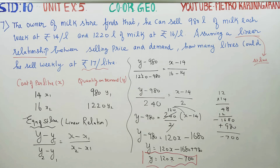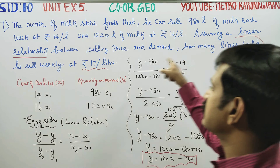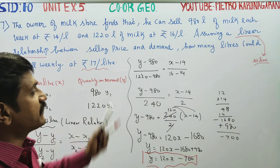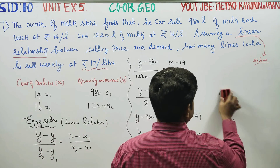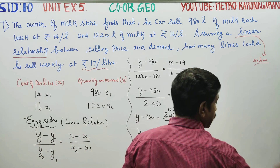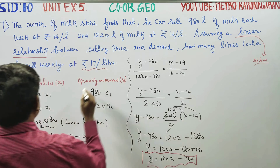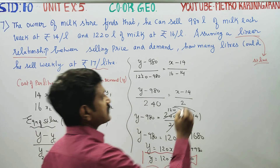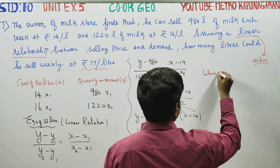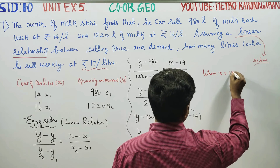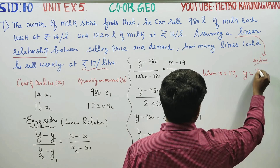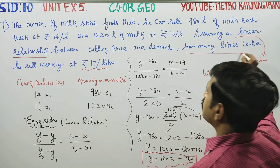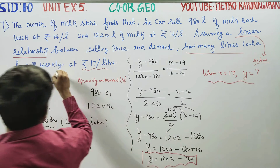The final question is: what is the demand when the rate is 17 rupees per litre? We substitute x = 17 into the equation. Here y is the demand — how many litres could he sell weekly?